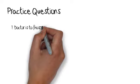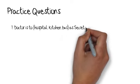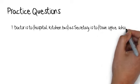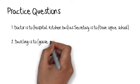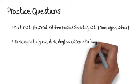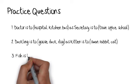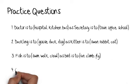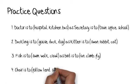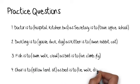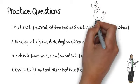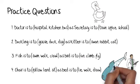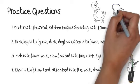Practice questions. Number one: doctor is to hospital, kitchen, bus as secretary is to train, office, school. Number two: duckling is to goose, duck, dog as kitten is to swan, rabbit, cat. Number three: fish is to swim, walk, crawl as bird is to run, climb, fly. Number four: chair is to follow, lend, sit as bed is to lie, walk, draw.